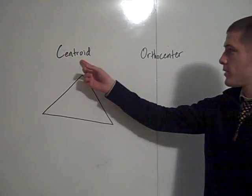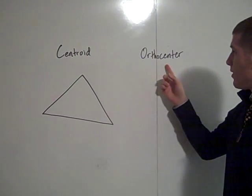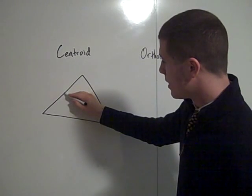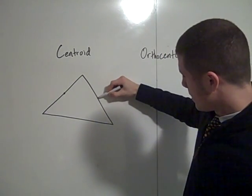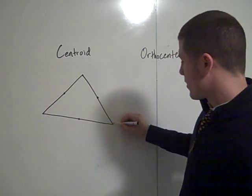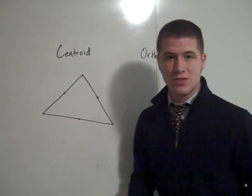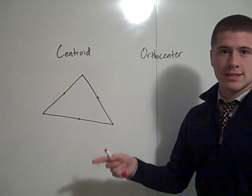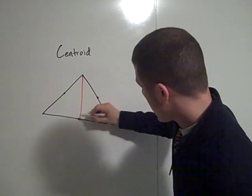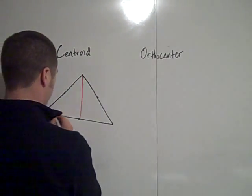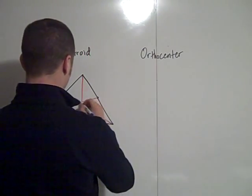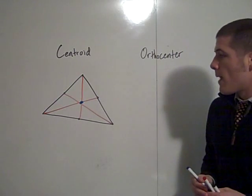The two other centers of a triangle are the centroid, or the center of mass, and the orthocenter. To construct the centroid, first you need to find the midpoints of each leg of the triangle. The centroid is the point of concurrency of the medians of the triangle, and the medians connect a vertex to the opposite midpoint. The medians are concurrent at the centroid.